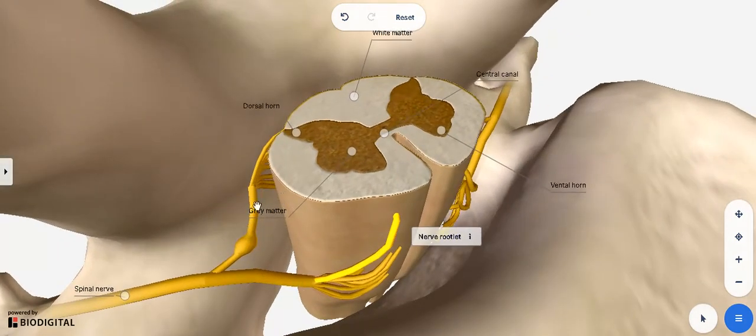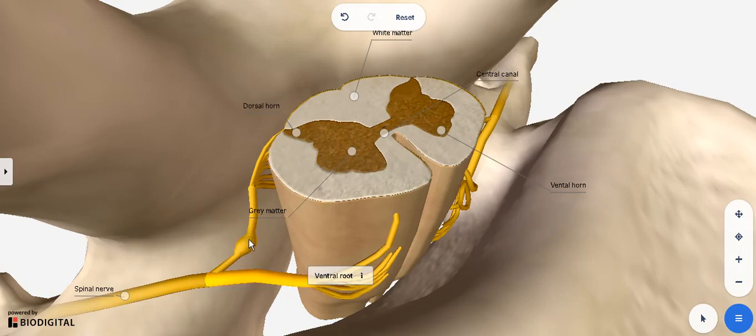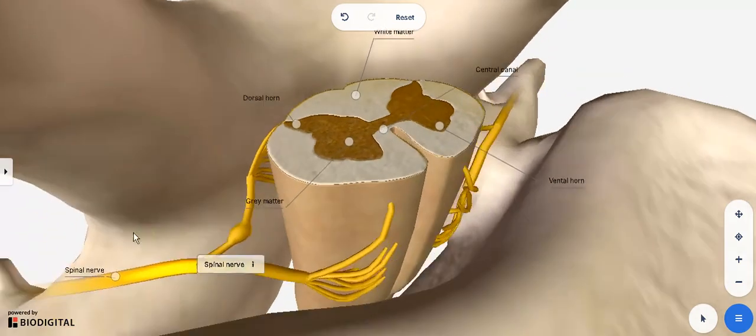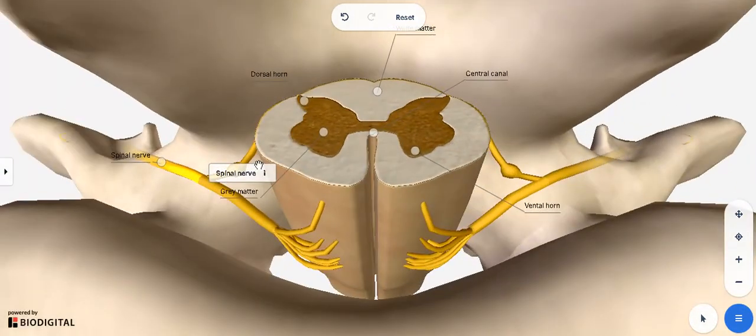They form the dorsal root as well as the ventral root. The dorsal root has the ganglion, which is not being selected here, but that is your posterior root ganglion. Both combine to form your spinal nerve, which exits through the intervertebral foramen.